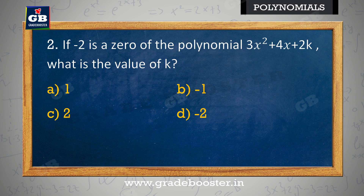If minus 2 is a zero of the polynomial 3x² + 4x + 2k, what is the value of k? Yadi minus 2, polynomial 3x² + 4x + 2k ka shunya hai, to k ka mulya kya hai? a) 1, b) minus 1, c) 2, d) minus 2.